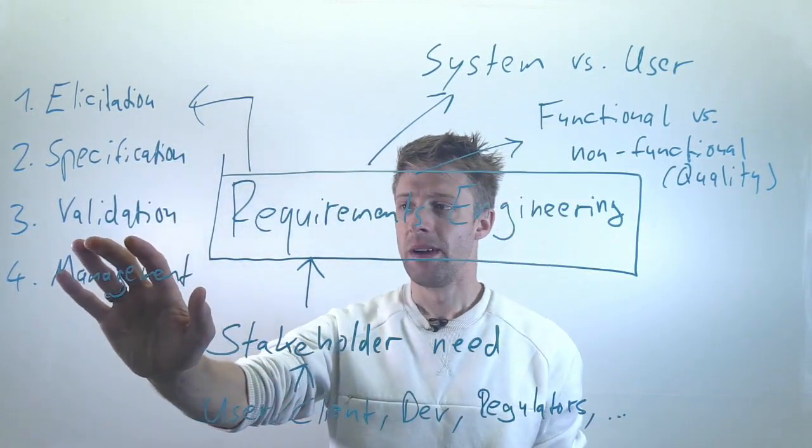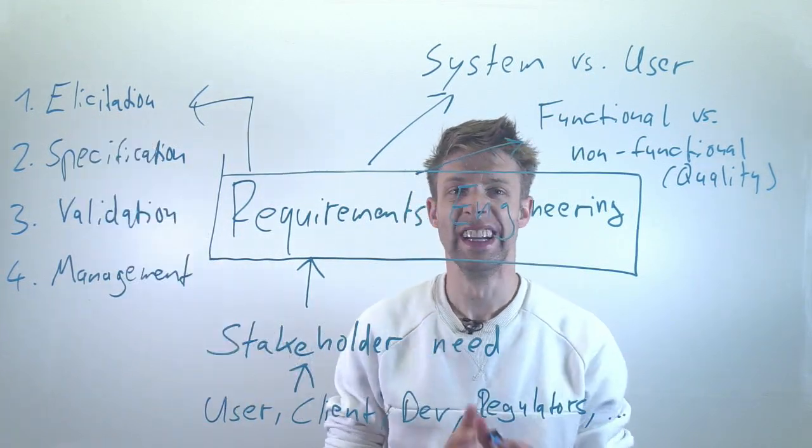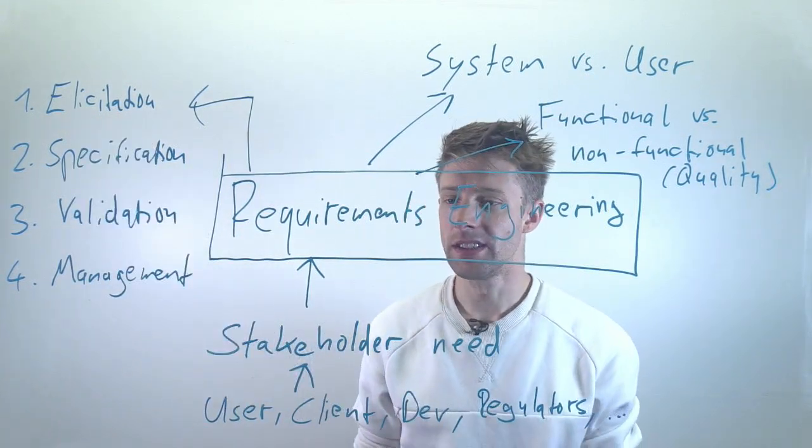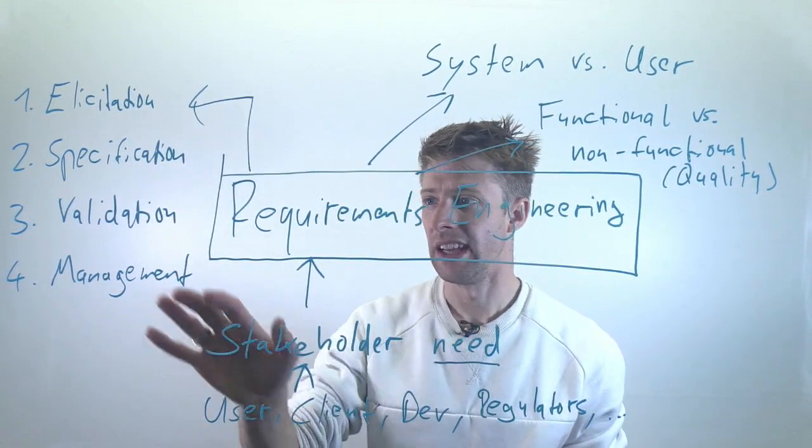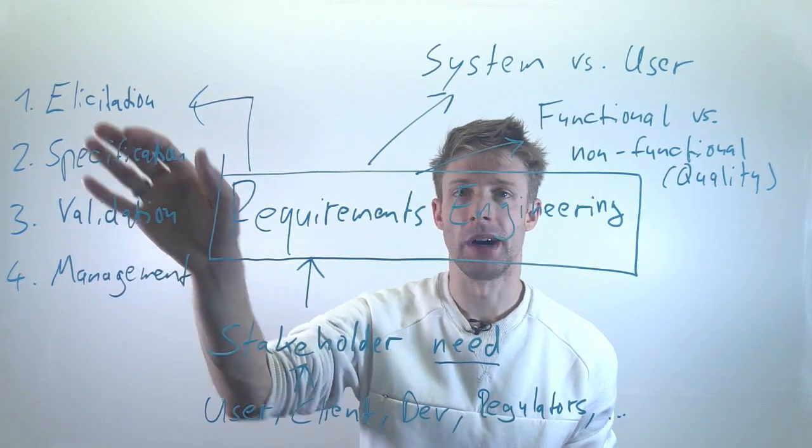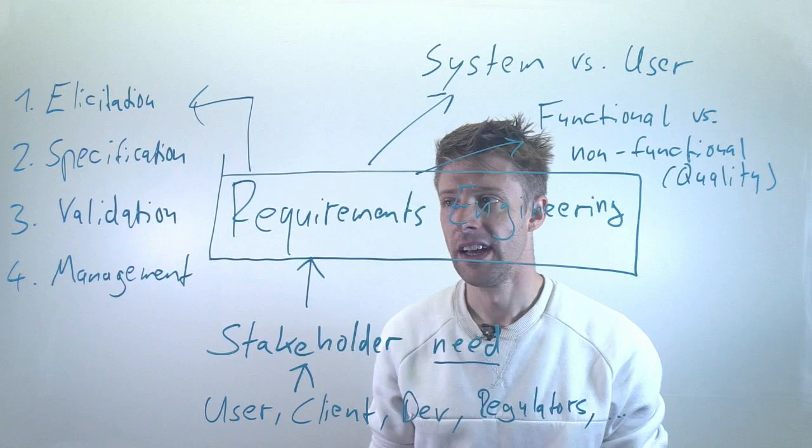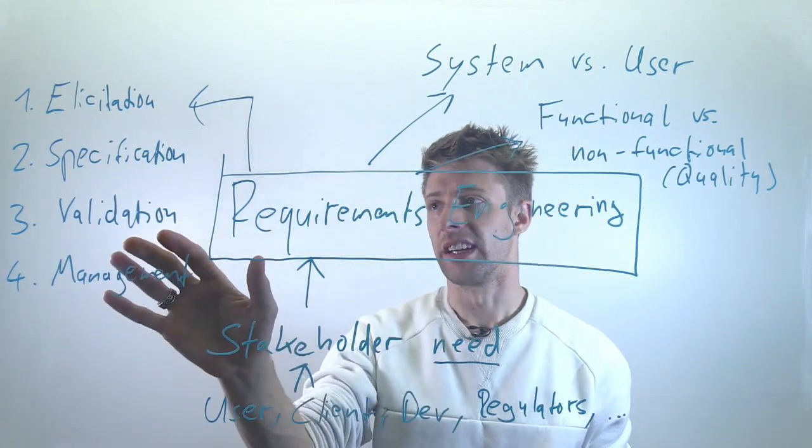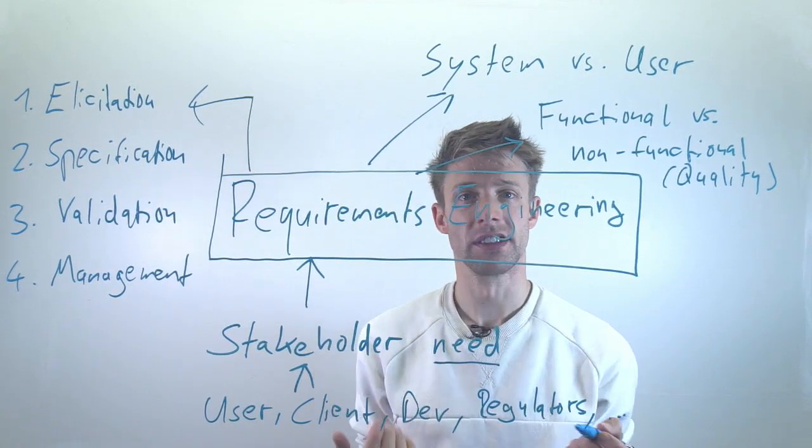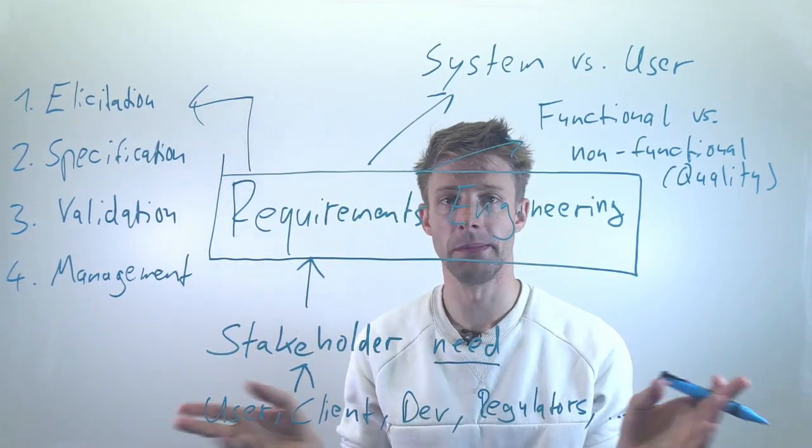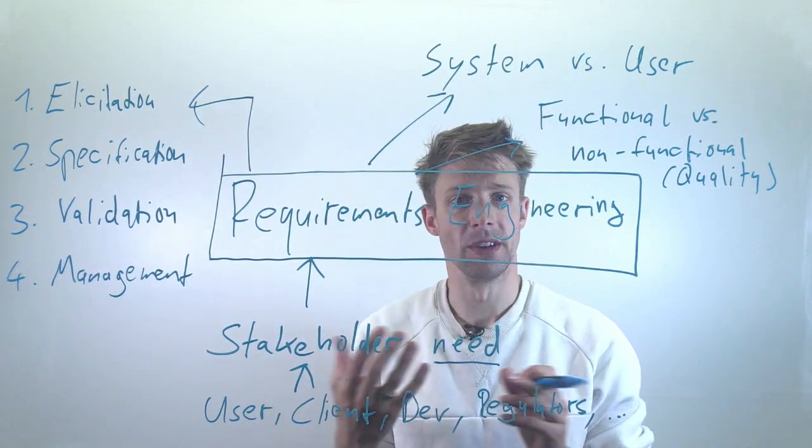Validation is making sure, ensuring somehow, that the requirements you have found are good enough and that means they are actually stakeholder needs - you have captured them. It also means to check somehow whether you have forgotten any important ones, so are they complete enough. You have to check if you have a lot of requirements whether they fit together, whether they're consistent. If you have two different requirements that say opposing things, then you have a problem - you don't know exactly which one should be the right one.